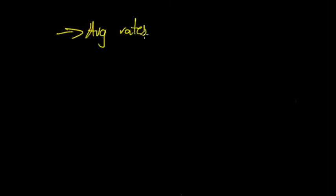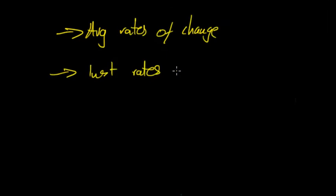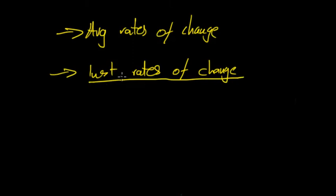There are two main types of rates of change you have to calculate: average rates of change and instantaneous rates of change. You'll mainly deal with instantaneous rates of change once you've done differentiation, because when you differentiate at a given point you are finding the instantaneous rate of change. A question may just say 'find the gradient at this point,' but the instantaneous rate of change is what they mean.